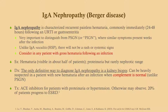IgA nephropathy is characterized by recurrent painless hematuria, commonly occurring immediately after an upper respiratory tract infection or gastroenteritis. This is different from Henoch-Schönlein purpura — HSP is IgA-mediated and can cause renal failure in a very similar way, but HSP will also have a rash and abdominal pain, which do not come with IgA nephropathy alone.